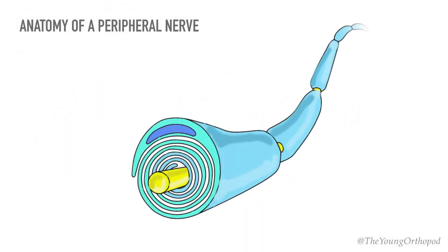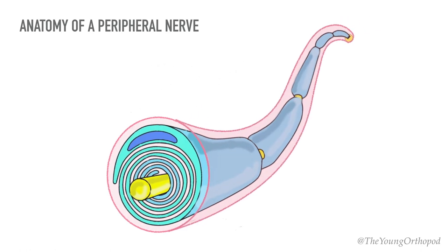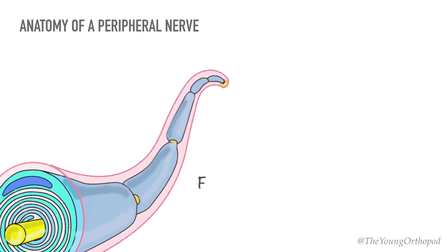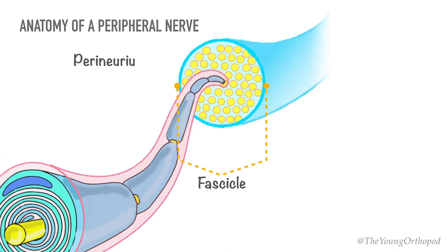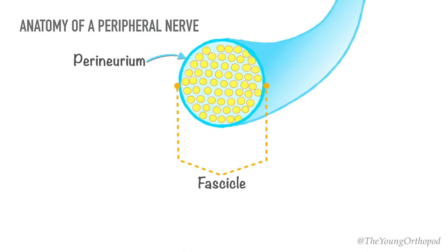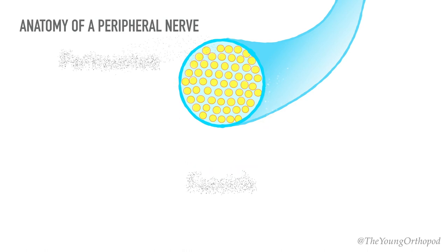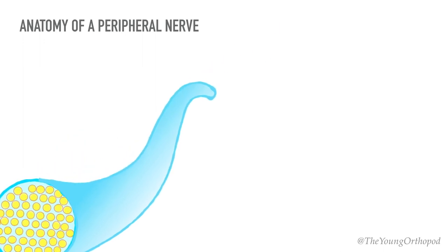When looked at longitudinally in a peripheral nerve, these endoneurium-covered axons are packed together to form a fascicle. Each fascicle is surrounded by a denser layer of perineurium. These perineurial sheets are strong enough to be handled by fine instruments during surgeries of nerve repair.